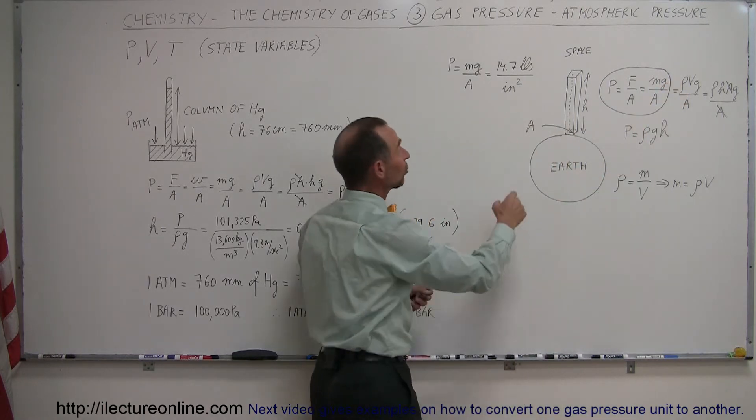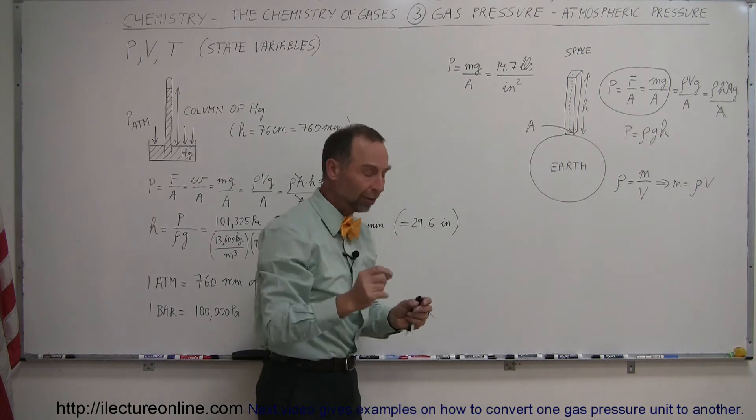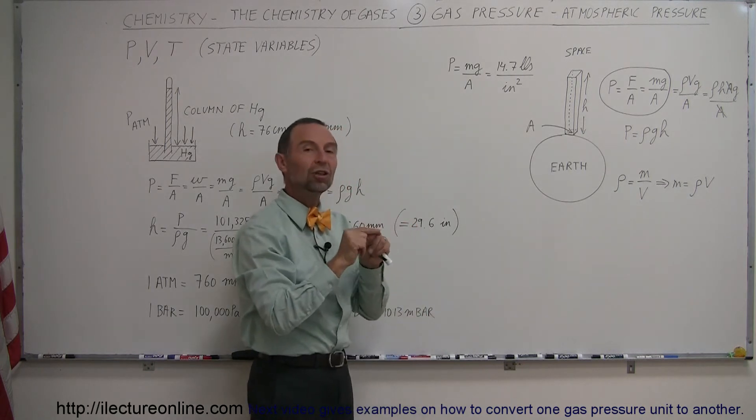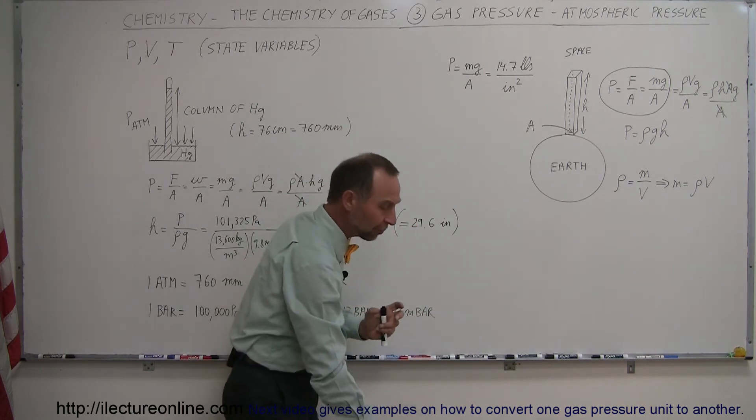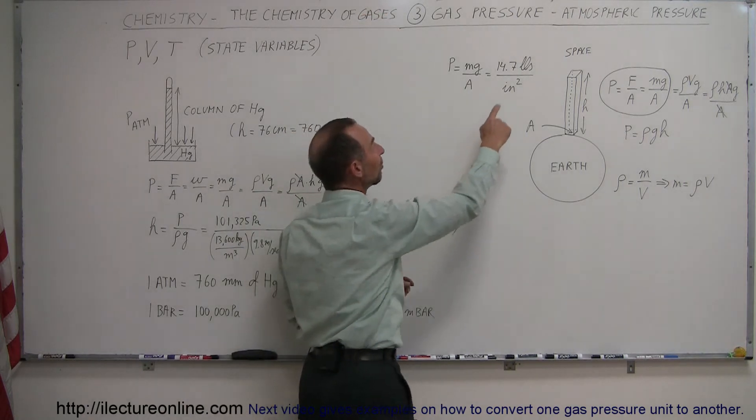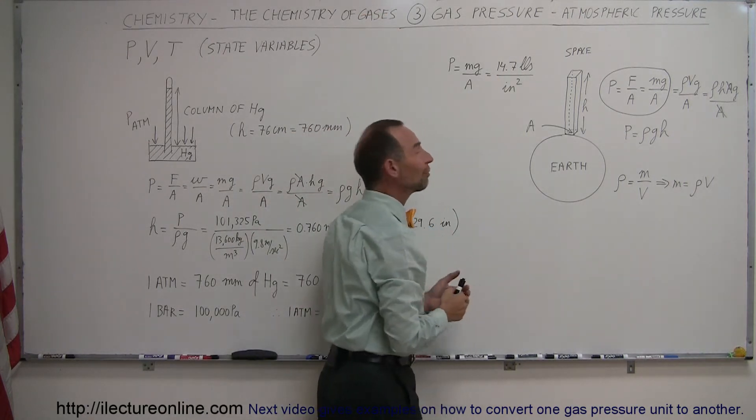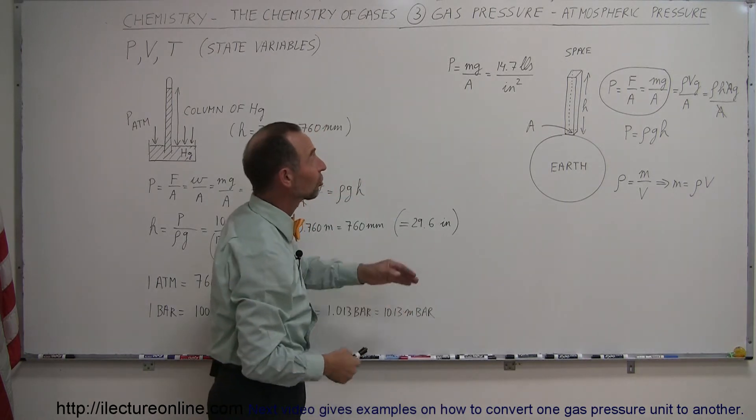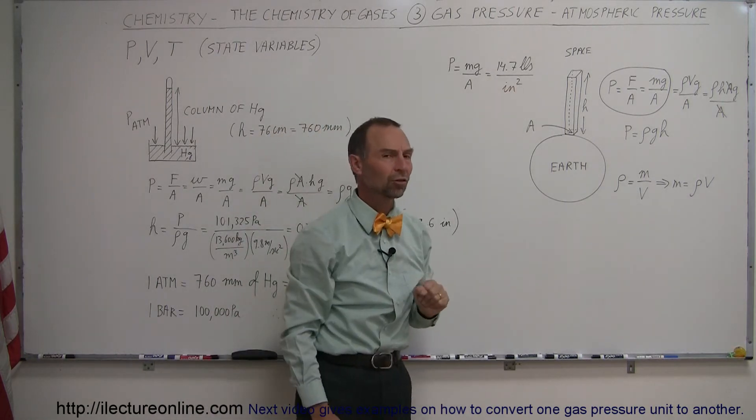And if you actually go and measure that, it turns out a column of air that is one square inch in cross-sectional area from the ground all the way up to the edge of space has a weight of 14.7 pounds. And therefore, the pressure, the atmospheric pressure, is 14.7 pounds per square inch.